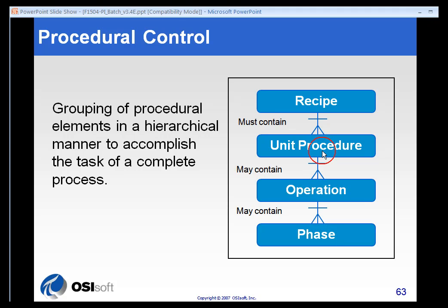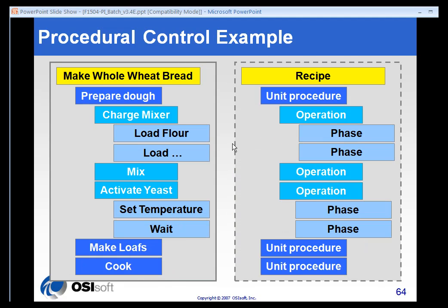An example shown here uses bread — everybody can picture how bread is made. There are three general steps: you prepare the dough, you make loaves, and you cook it. In the procedural control example, preparing dough, forming loaves, and cooking would each be unit procedures. Taking preparing dough as an example: you charge the mixer, you mix, you activate the yeast, and you wait. Each of these steps would be considered an operation, and each step within an operation would be considered a phase.